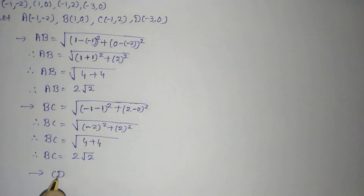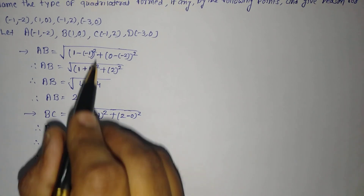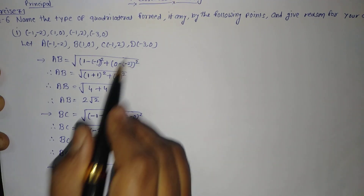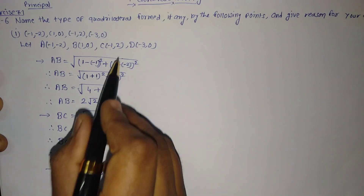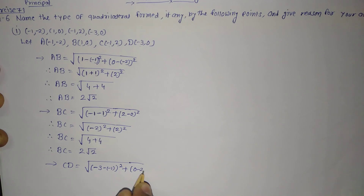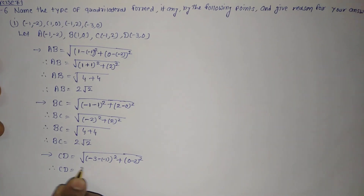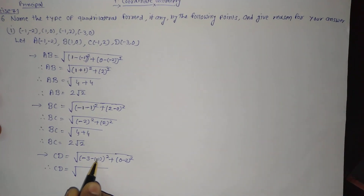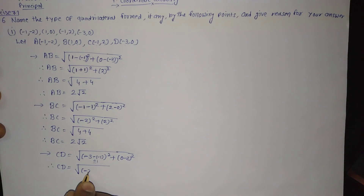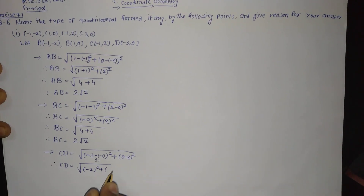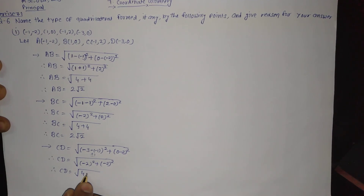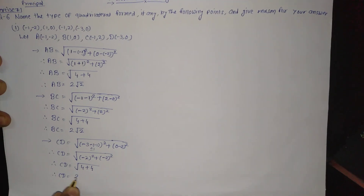Let us go for CD. Using the same distance formula with C = (-1, 2) and D = (-3, 0): CD = √((-3 - (-1))² + (0 - 2)²). Minus minus turns to plus, so that is √((-3 + 1)² + (-2)²) = √((-2)² + (-2)²) = √(4 + 4). So CD is also equal to 2√2.